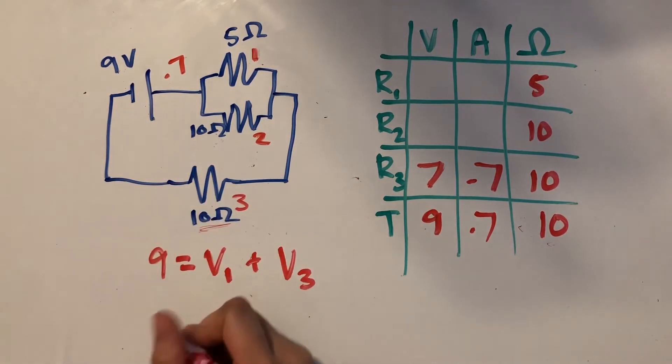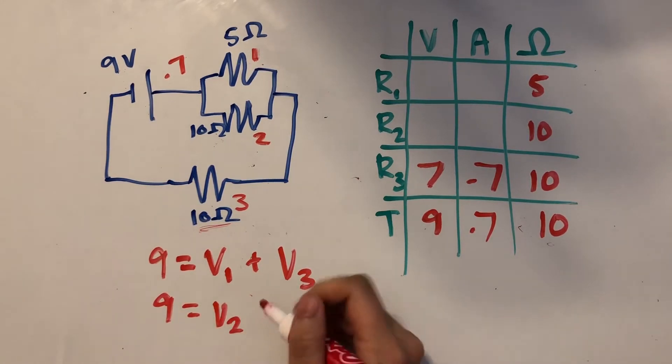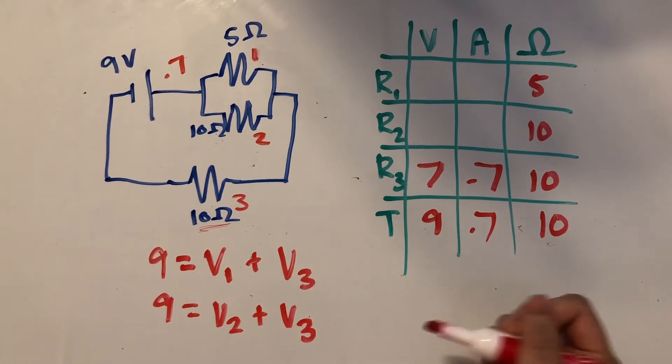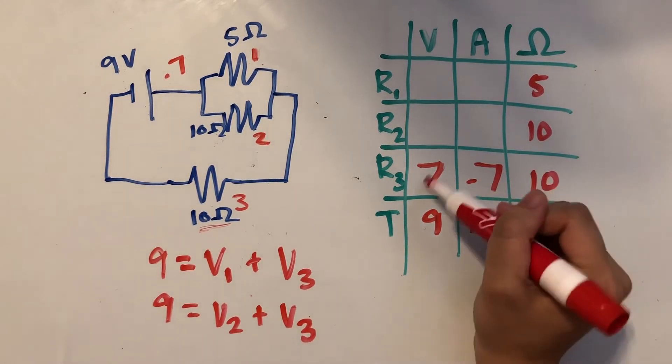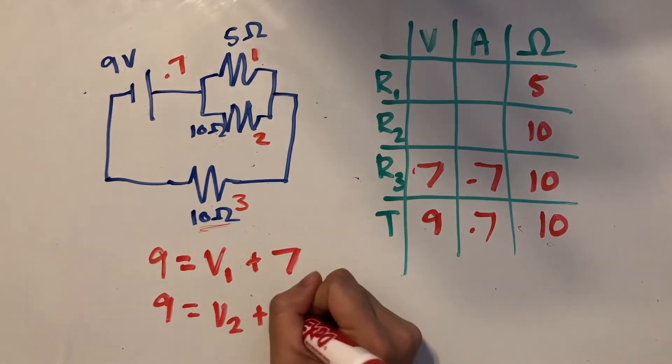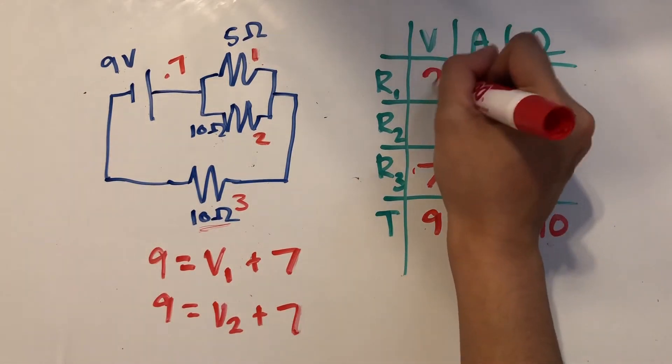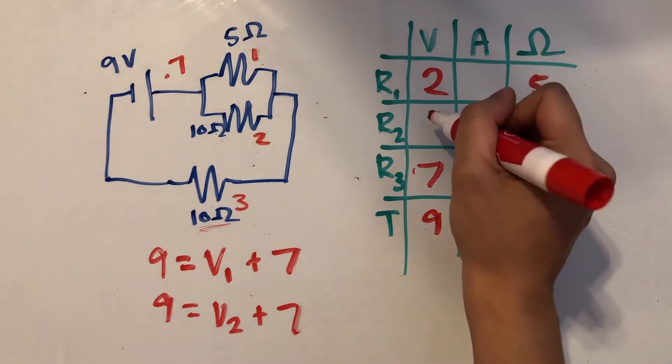And same thing for the second loop. 9 should be equal to the voltage at resistor 2 plus the voltage at resistor 3. And we know that the voltage at resistor 3 is equal to 7. So we can just plug that in for V3. And now we know that the voltage at resistor 1 is going to be equal to 2. And same thing for voltage 2.